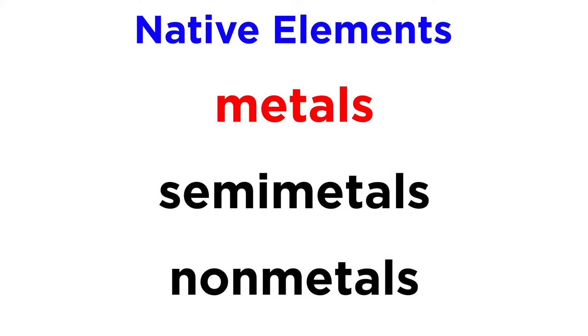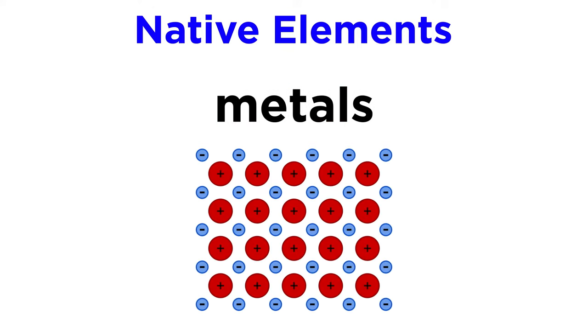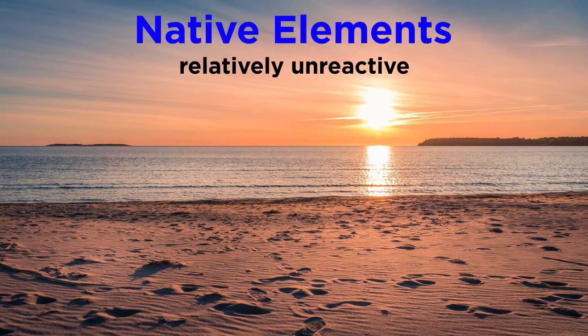Native metals will be of the greatest interest to us as they form most of the native elements. Remember that what makes a metal a metal is the propensity to have delocalized valence electrons that are shared among all its atoms. Most native elements are relatively unreactive, which is evidenced by their existence in such oxidizing environments as Earth's surface, where oxygen and water are readily available to form oxides and hydroxides.